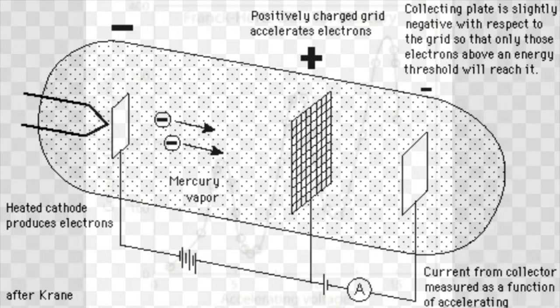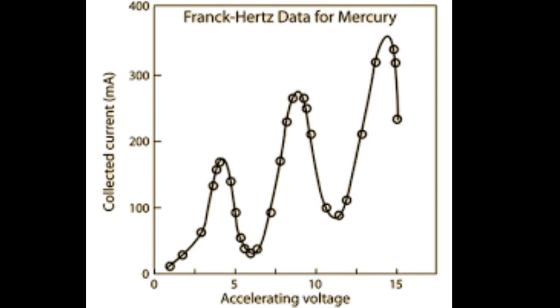The data from the experiment shows that when the accelerating voltage reaches 4.9 volts, the current sharply drops, indicating the sharp onset of a new phenomenon which takes enough energy away from the electrons that they cannot reach the collector.